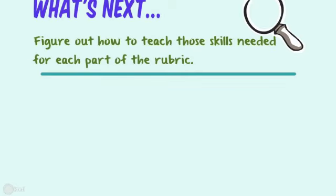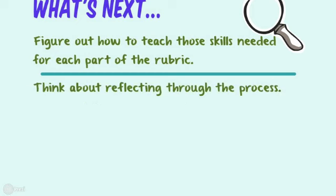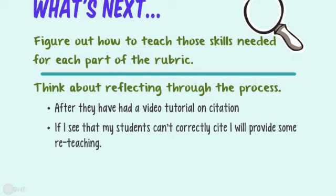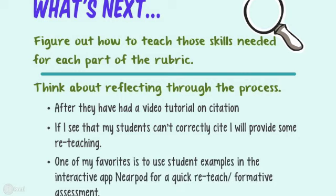Next, you need to figure out how to teach those skills for each part of the rubric. I also recommend that you reflect constantly and use your data to guide what you're doing. For example, after my students had a video tutorial on Sophia about citation, I was looking at their in-class work and noticed they weren't correctly citing. One of my favorite things to do is a quick 10–15 minute Nearpod activity — my school is one-to-one iPad — where I use student pieces and have kids interact, circling citations or identifying where a student correctly identified author's purpose.